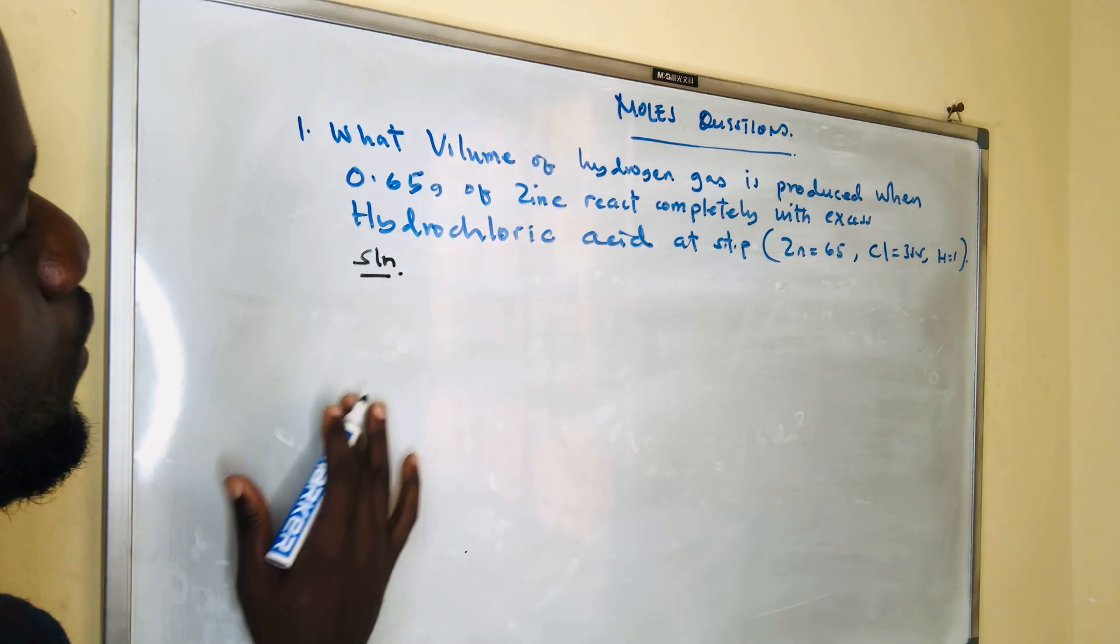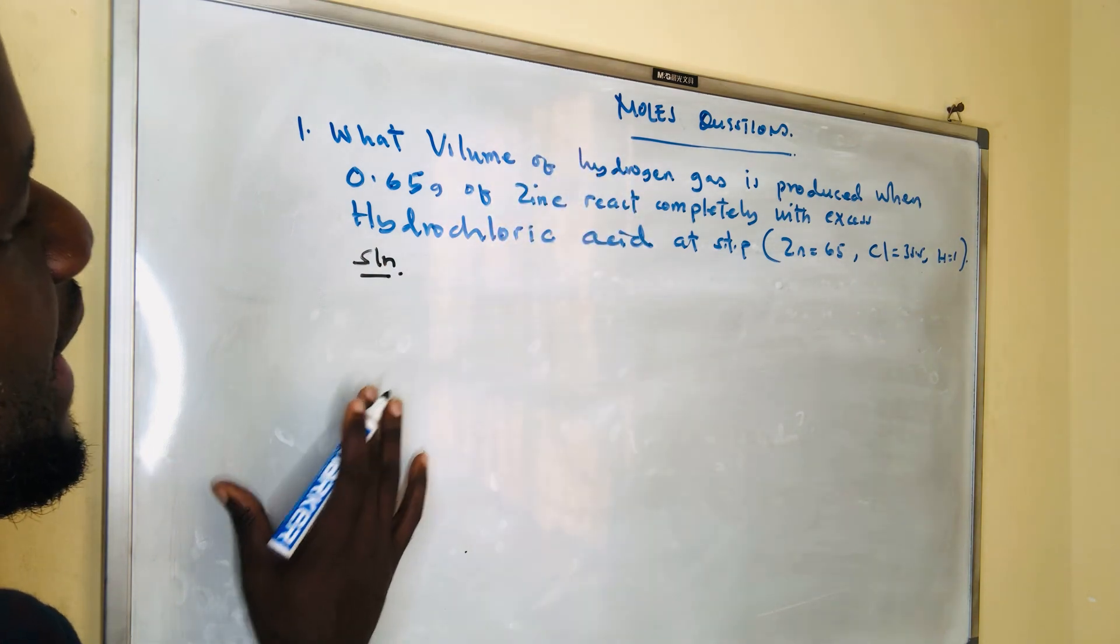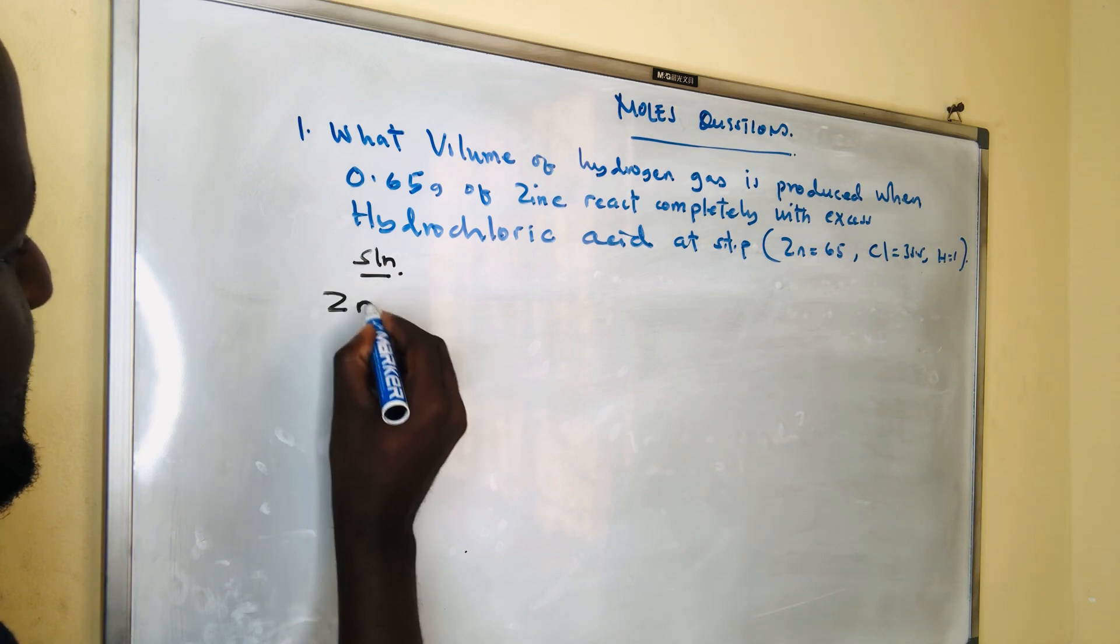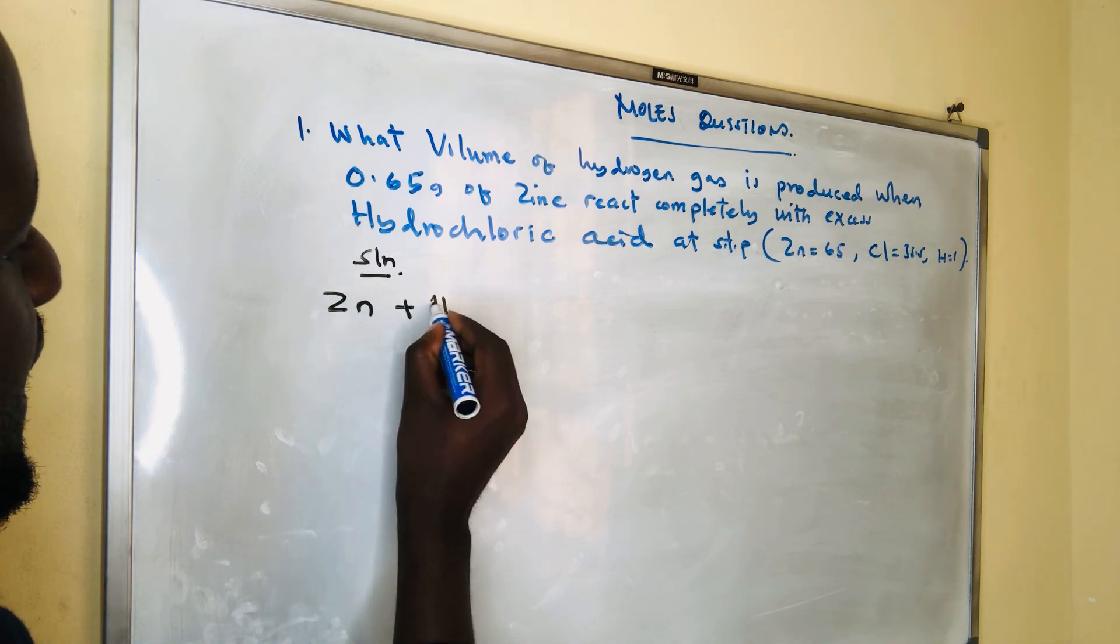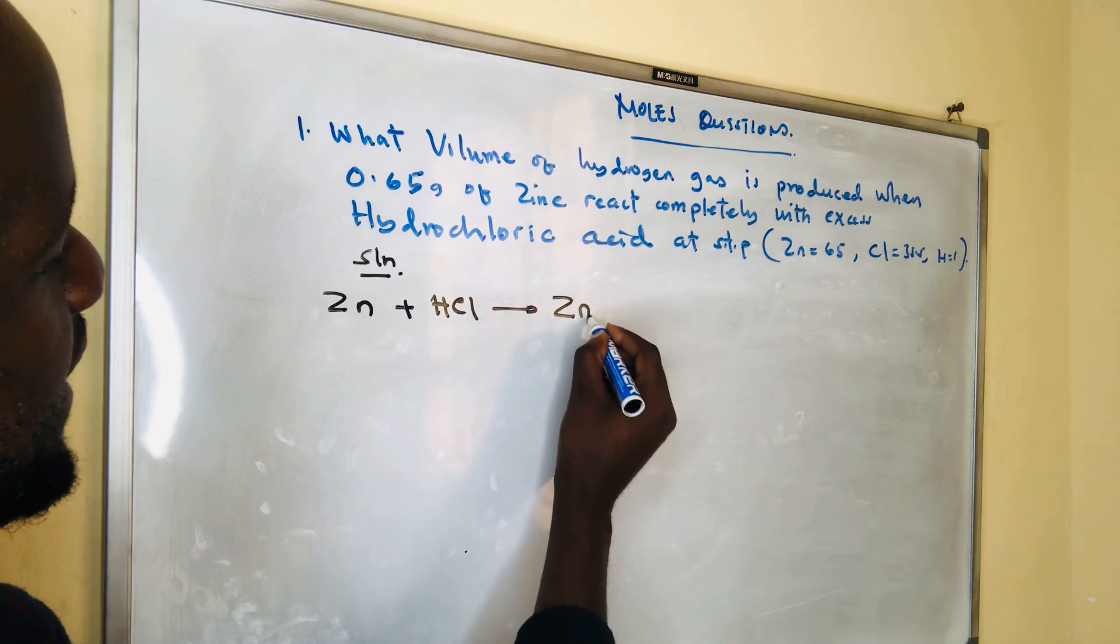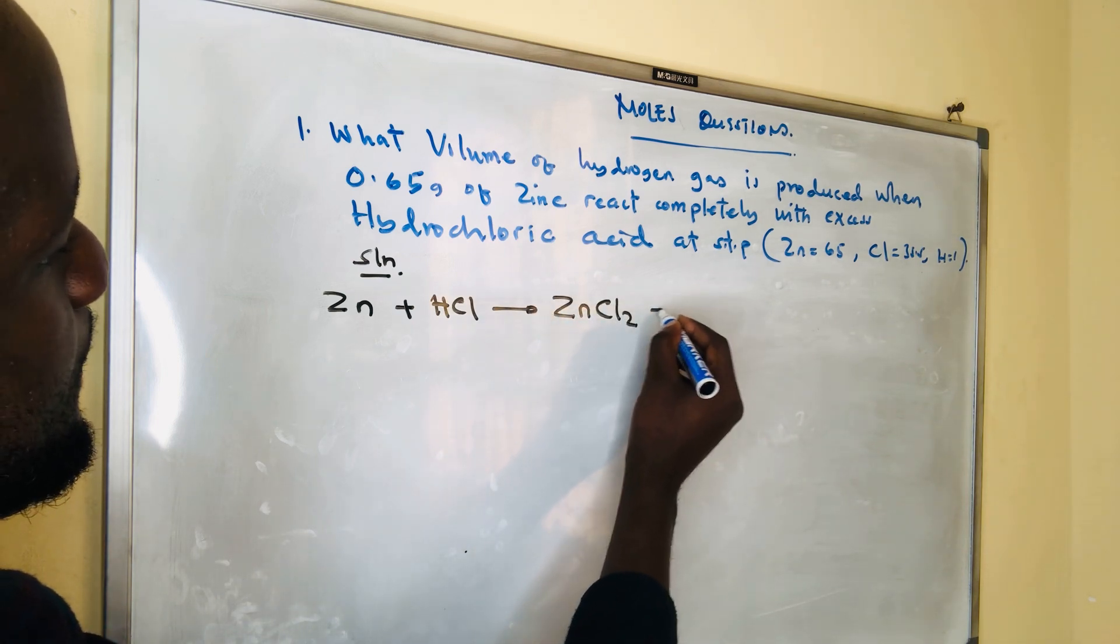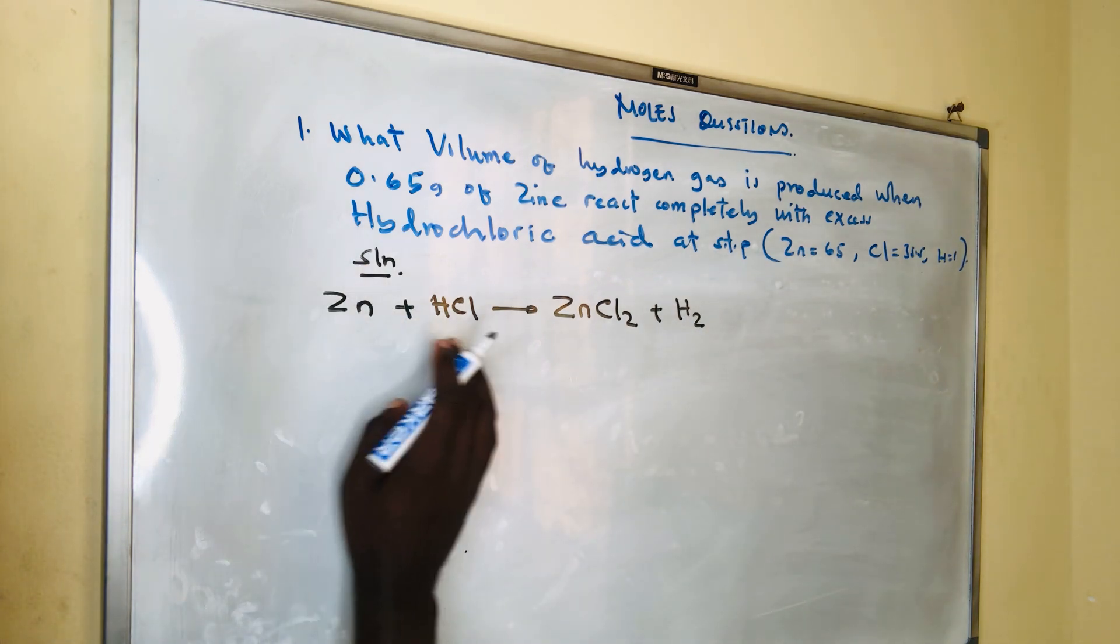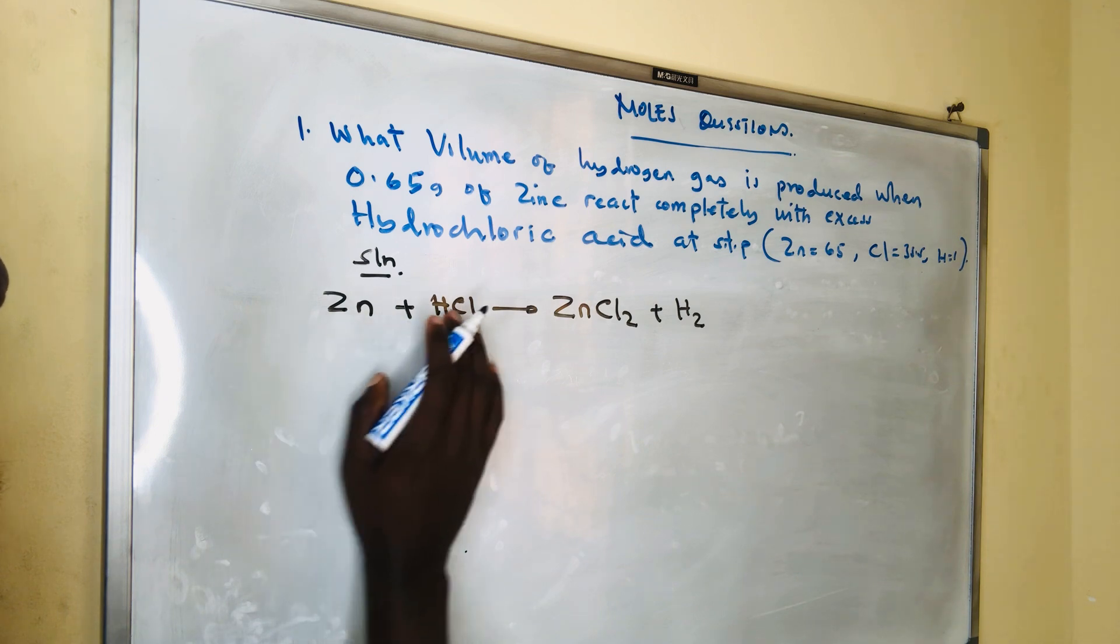You will take the reaction of zinc plus HCl. The end products that we expect are zinc chloride plus hydrogen gas, because zinc atoms displace hydrogen when they react, since zinc is more active compared to hydrogen.